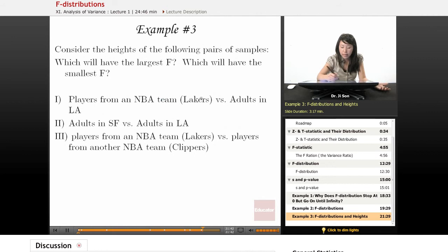So players from NBA team, Lakers, versus adults in LA. Well if we drew those two populations, Lakers versus LA, this probably has a lot of variance, a lot of variance here because that's a lot of people.